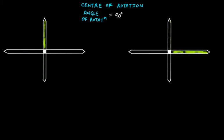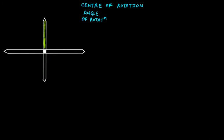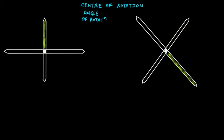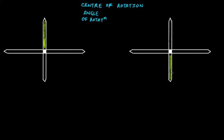We again rotate this with 45 degrees and reach here — again this figure and the original are not exactly the same, so no symmetry. We rotate by 45 degrees again, so the total is now 135 degrees — 45, 45, and 45. We again rotate by 45 degrees, and now at a total rotation of 180 degrees, the green arm is finally here.